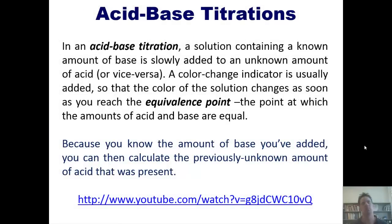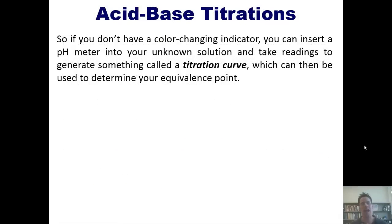Did that make sense? Good. Let me teach you some other details about this. So if you don't have a color changing indicator, you can get by by just inserting a pH meter into your unknown solution and then taking readings to generate something called a titration curve, which can then be used to determine your equivalence point.